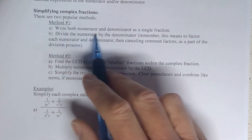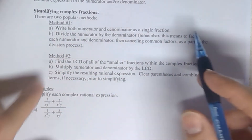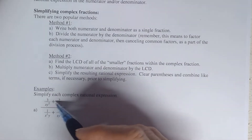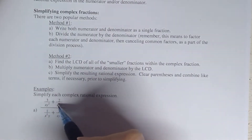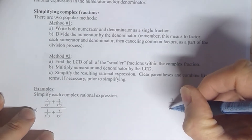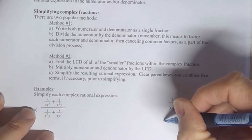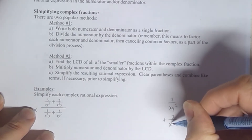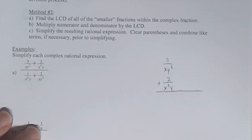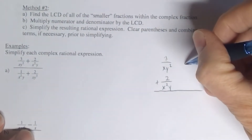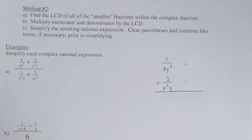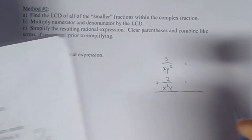Basically what it says is: write both the numerator and denominator as a single fraction — that's the first step. When you have two fractions being added together — and it could be true also for subtraction — the way that you make it into a single fraction is to go through the process of adding them together. As you guys know, you cannot add fractions together unless you have a LCD, a common denominator. Our denominators here are just a single term.